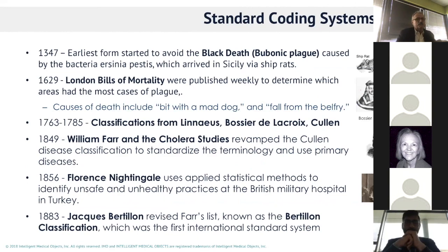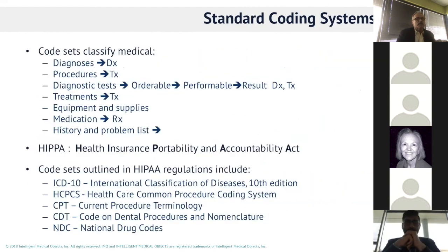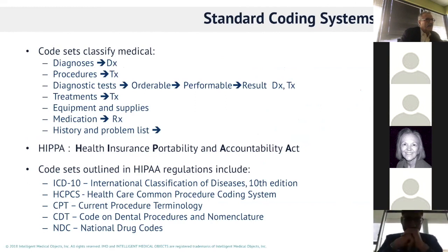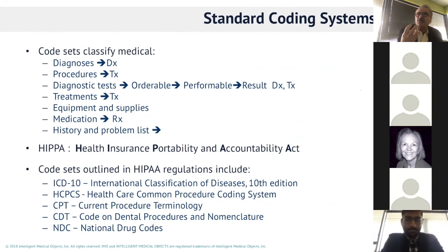We talked about coding systems — documentation is online. The whole concept is: diagnostics procedure goes to orderable, to performable, to result. When it gets to result, to be billed it must connect a diagnosis. Diagnostics and treatment must be identified for reimbursement. Medications historically have been a little loose, but now pharmacists are expecting the provider to clearly define the diagnosis before dispensing medication.